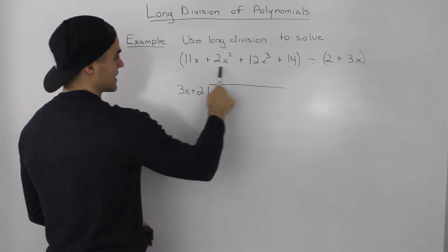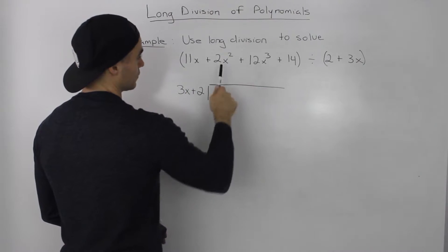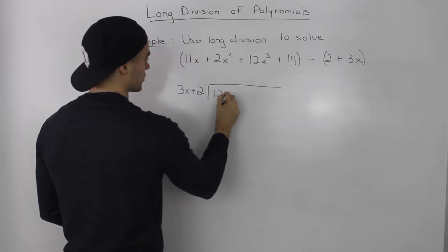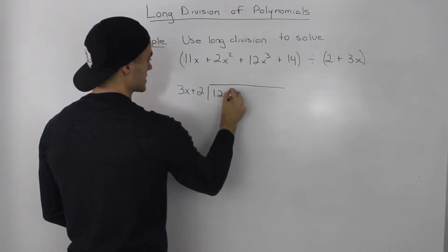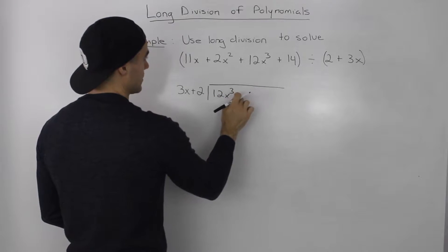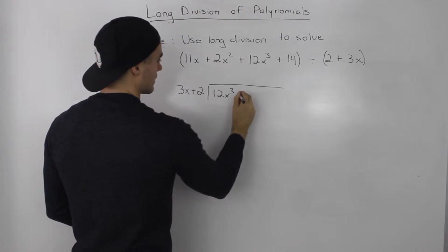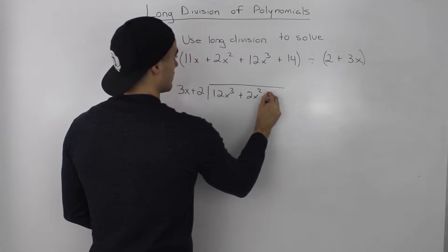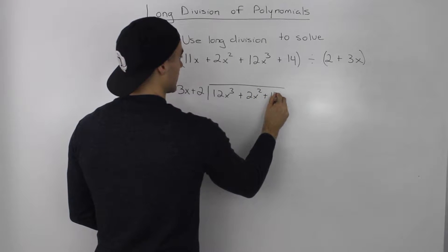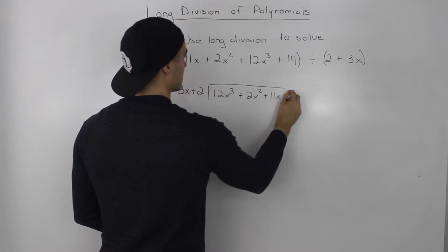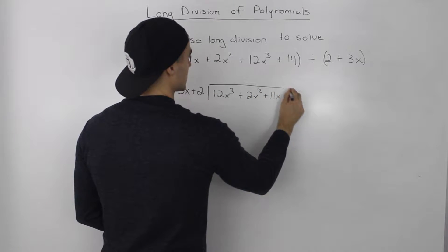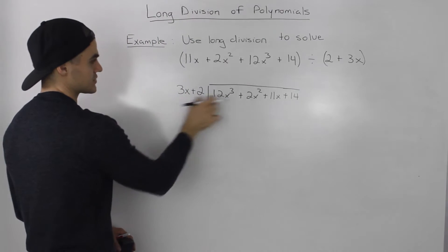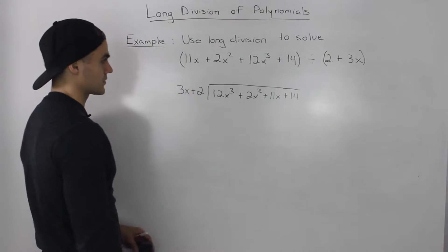Notice how this dividend also needs to be rearranged. The 12x cubed should come first because that's the highest exponent, then the 2x squared, then the 11x, then the 14. So always make sure highest degree to lowest degree.